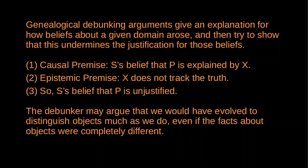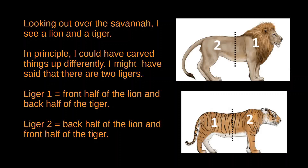The argument against ordinary objects would be: we would have evolved to distinguish objects in pretty much the same way we do now even if there were no objects, or even if the facts about objects were completely different. So our beliefs about what objects exist are a result of evolutionary and cultural influences, and they're not tracking the truth about the object facts. For example, when I look out across the savannah, I see various objects — maybe a lion, a tiger, a tree. But in principle I might carve up the world in completely different ways. Instead of distinguishing the lion and the tiger, I might say there are two ligers: one composed of the front part of the lion and the back part of the tiger, the other composed of the front half of the tiger and the back half of the lion. Or there might be a tree lion — an object composed of a tree plus whichever lion is closest to the tree — and a tree tiger.